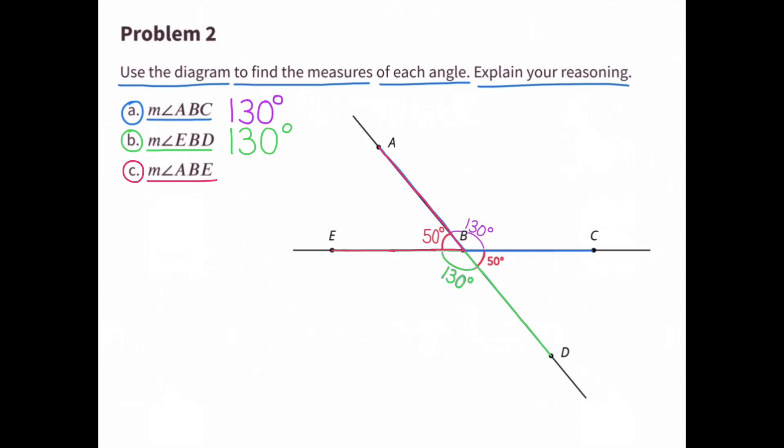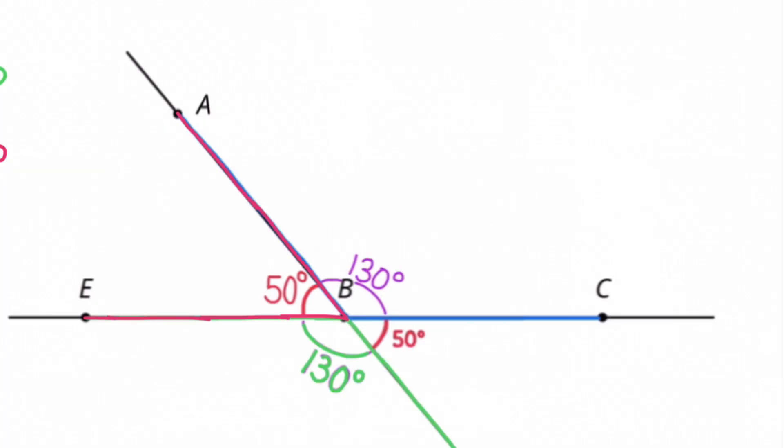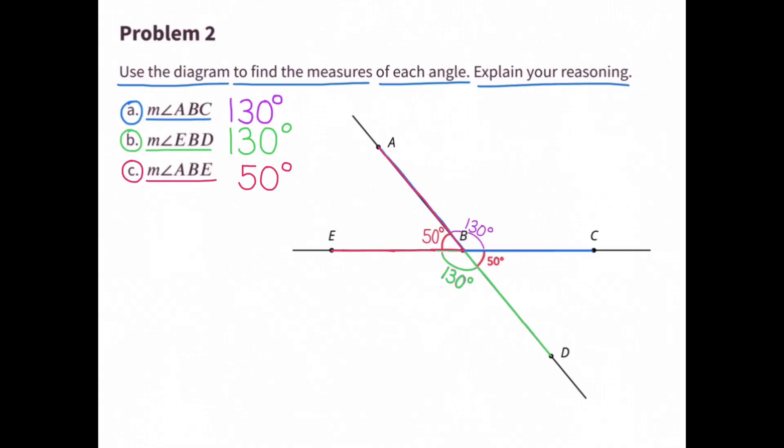C. What is the measure for angle ABE? Highlighted in a reddish color, angle ABE is 50 degrees. Again, 50 degrees plus 130 degrees equals 180 degrees. The measure of angle ABE is 50 degrees.